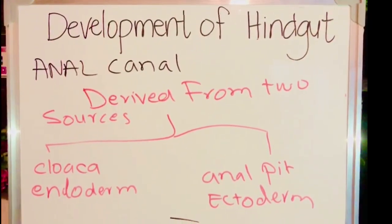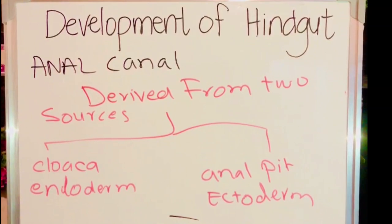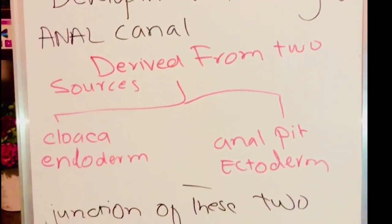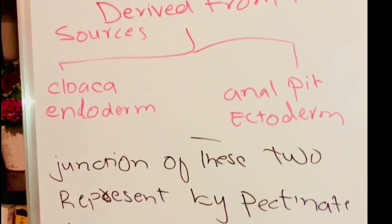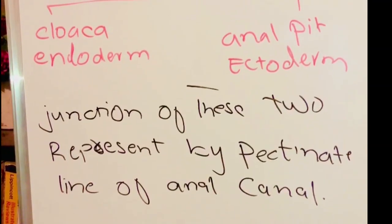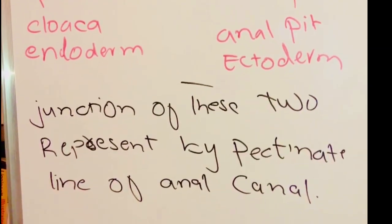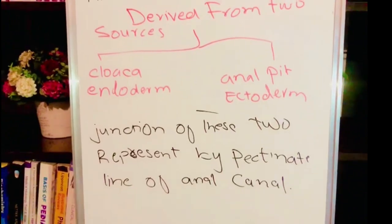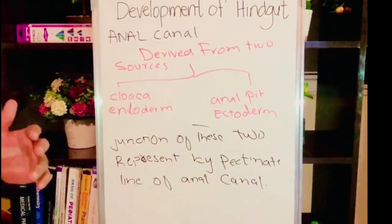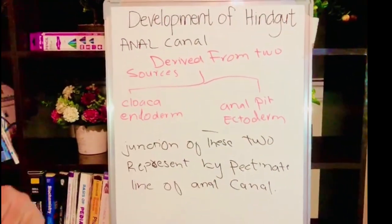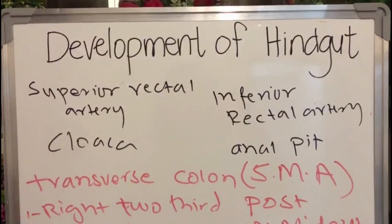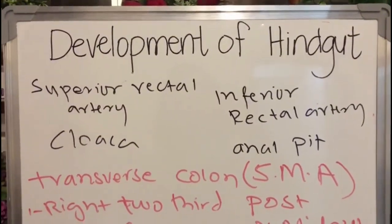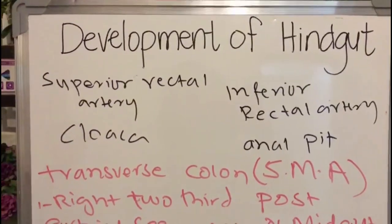The anal canal develops from two sources: the cloaca, which is part of the endoderm, and the anal pit, which is part of the ectoderm. The junction between these two sources is represented by the pectinate line of the anal canal. The blood supply to these two parts is different because they arise from different embryological layers.